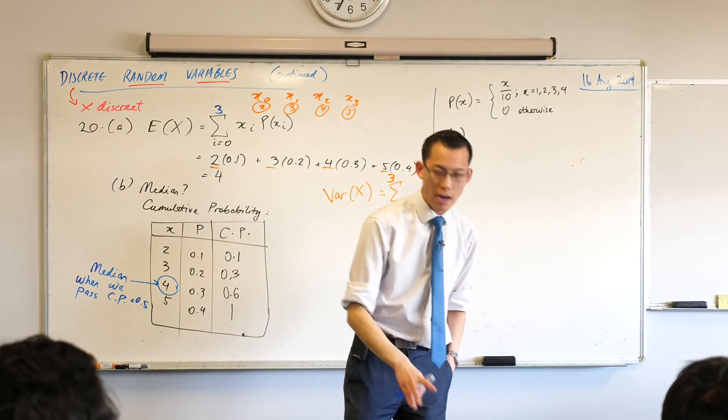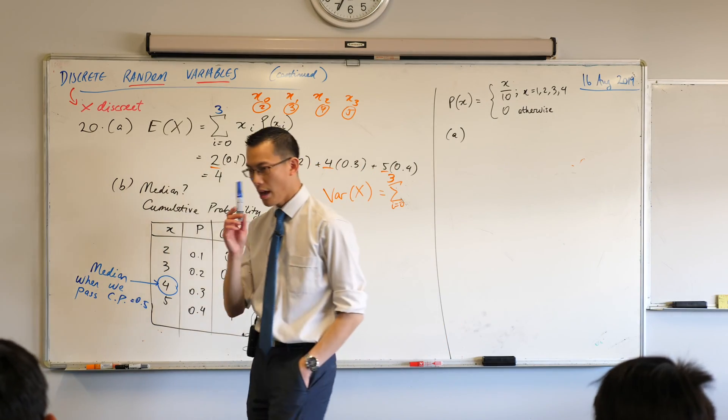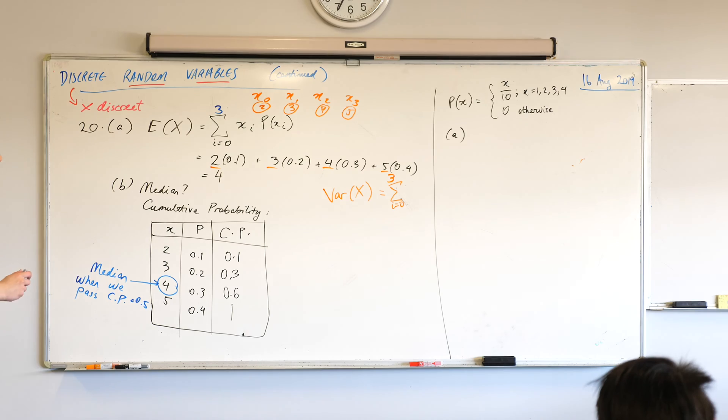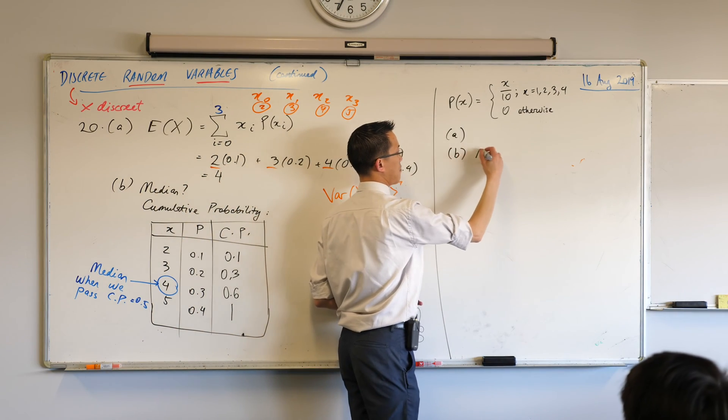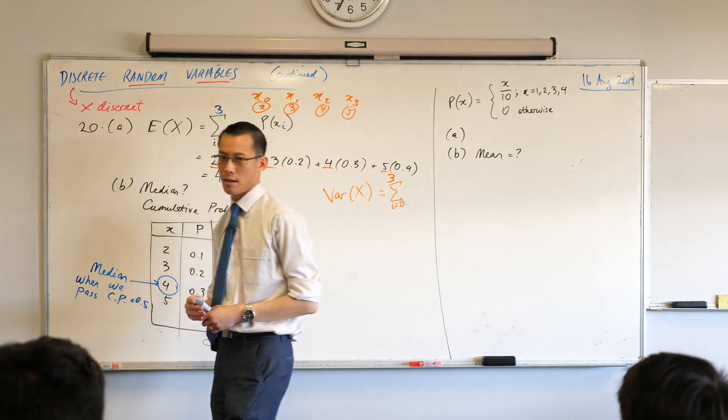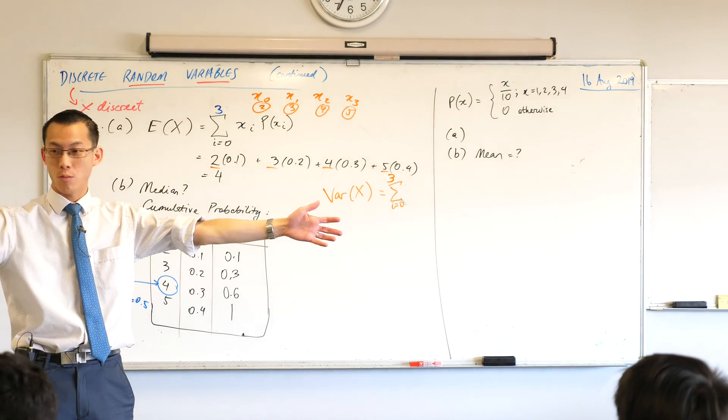Now, I want you to read this next part super carefully for me. Part B, it says, hence, calculate the mean of the distribution. Calculate the mean. I'm just going to write that down. Can I ask you guys, how do we normally calculate the mean? If I wanted to calculate the mean height of this group of people, you guys, right? What would I do?